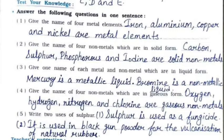Third: give one name each of a metal and a non-metal which are in liquid form — mercury is a metallic liquid and bromine is a non-metallic liquid. Fourth: name four non-metals which are in gaseous form — oxygen, hydrogen, nitrogen, and chlorine are gaseous non-metals.